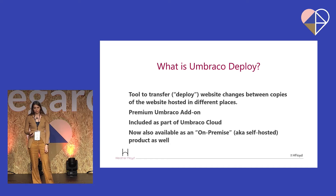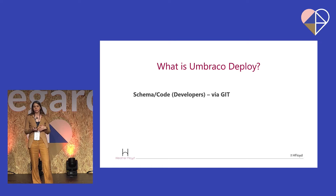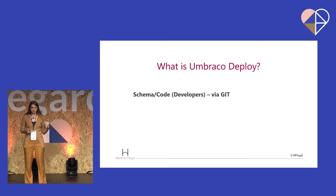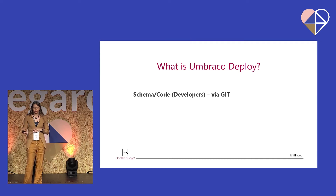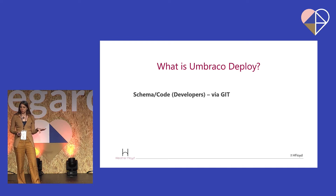Basically what you've got is two pieces to your website. You have your developer stuff, which is schema—everything in the Umbraco database related to your document types, data types, links to the templates, everything you work on in the back office settings area. You also have all your code files: compiled DLLs, CS files, front-end assets, CSS, JS files, Razor views, static images. These things are all managed in Umbraco Deploy using Git version control.